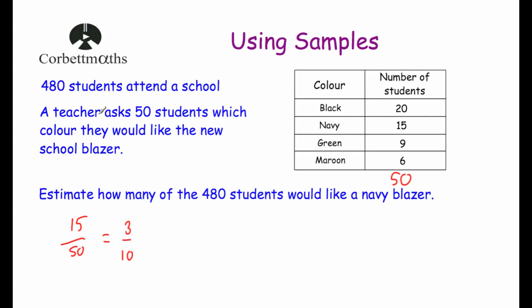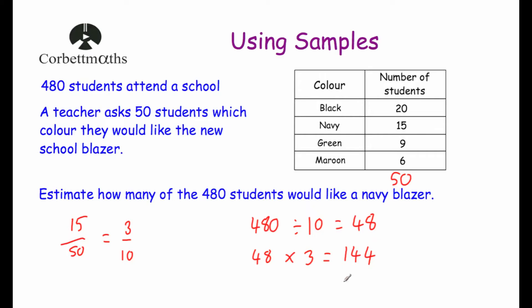So let's assume that three-tenths of our population — our 480 students — would like a navy blazer. To work out three-tenths of 480: take 480 and divide by 10, which equals 48. Then multiply 48 by the numerator 3, giving 48 multiplied by 3, which is 144. So our estimate for how many of the 480 students would like a navy blazer is 144.